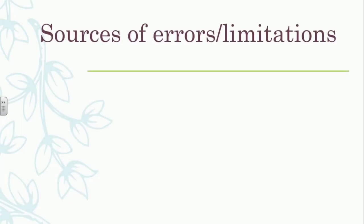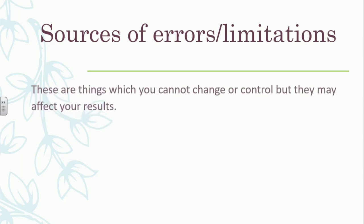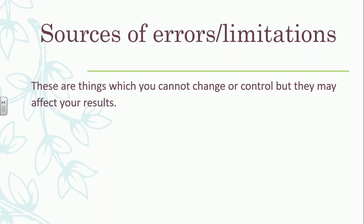The last section is sources of errors or limitations. These two things are essentially the same. These are things which you cannot control or change, but they will affect your results — they cause problems in your experiment and prevent you from getting the best or optimum result possible.